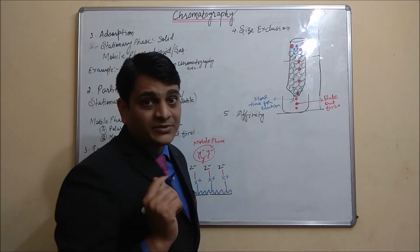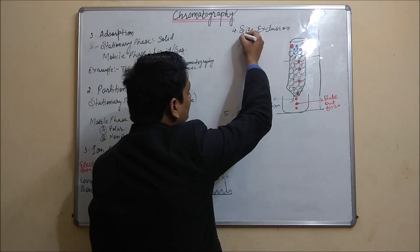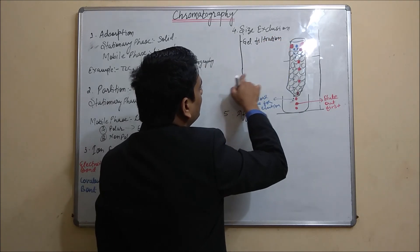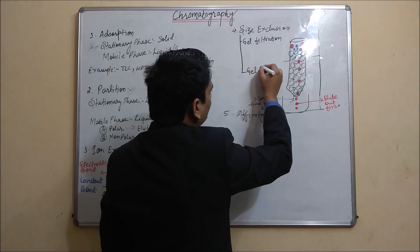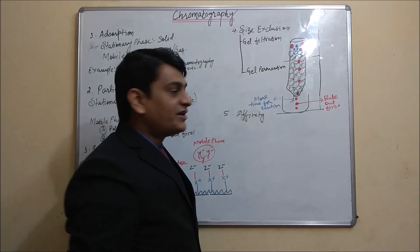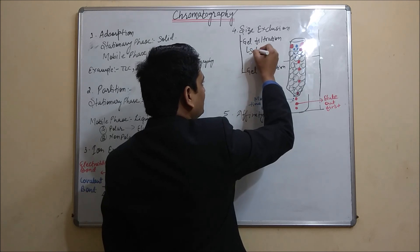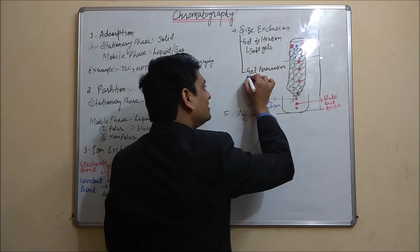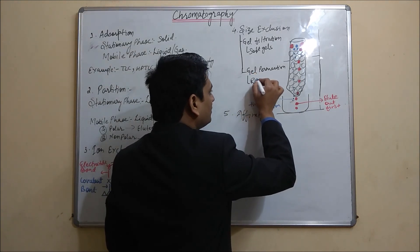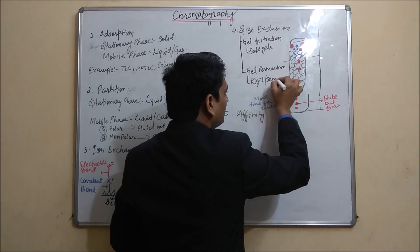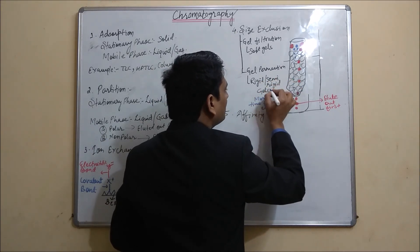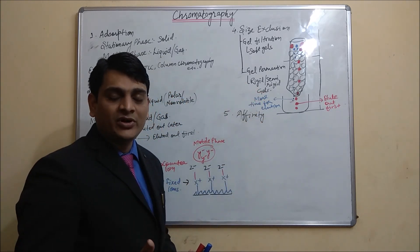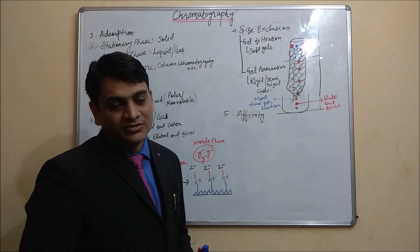There are two types of size exclusion chromatography: gel filtration and gel permeation. In gel filtration chromatography, soft gels are used. In gel permeation chromatography, rigid or semi-rigid gels are used. Details of gel filtration and gel permeation will be discussed in an upcoming video.